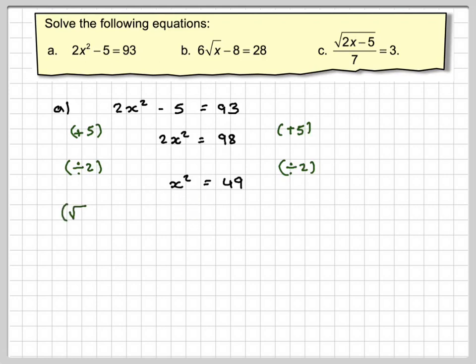The opposite of squaring is to take the square root. The square root of x squared is x, and the square root of 49 is plus or minus 7.